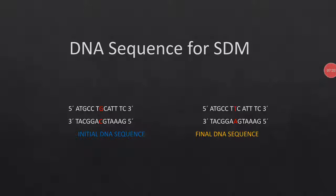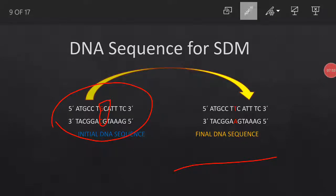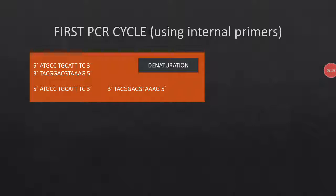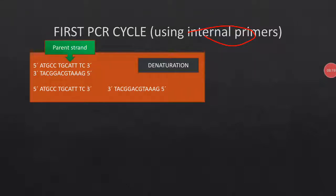Now I will explain PCR SDM using multiple primers with a DNA sequence example. Here is the template strand; I want to change this G to a T. In the first PCR cycle, we use internal primers. In the first step — denaturation — both parent strands are separated due to breakdown of hydrogen bonds.